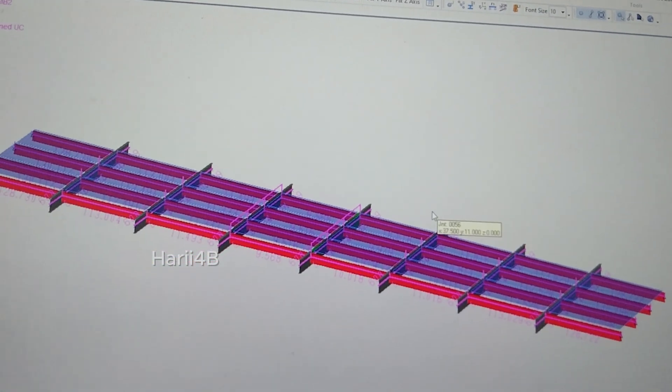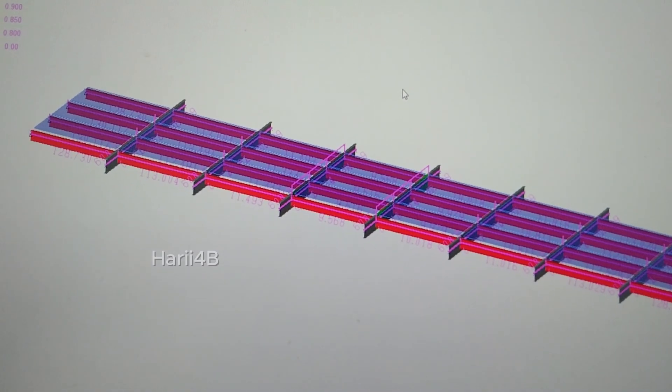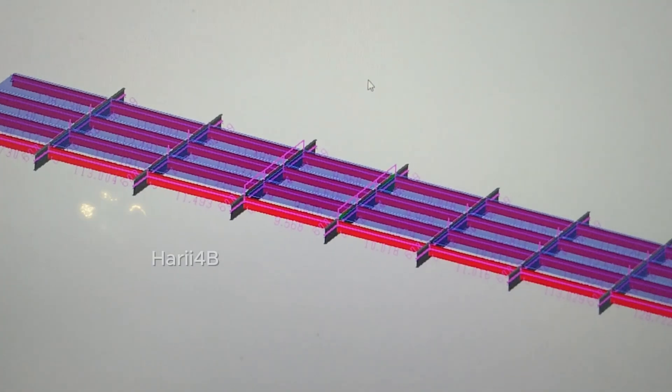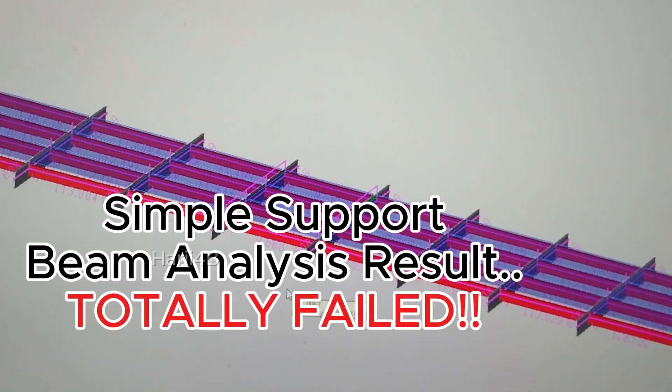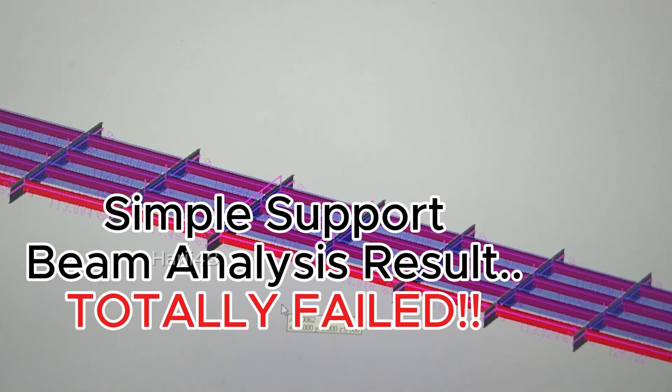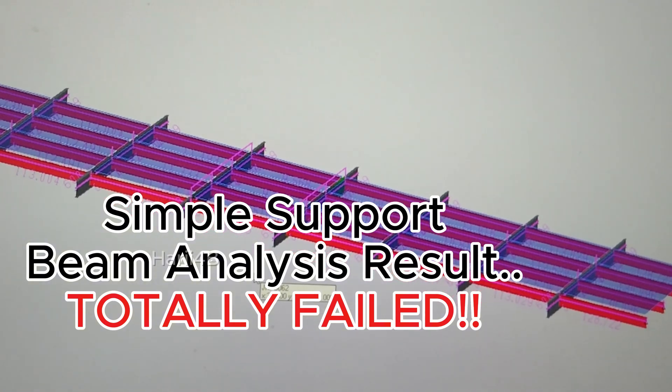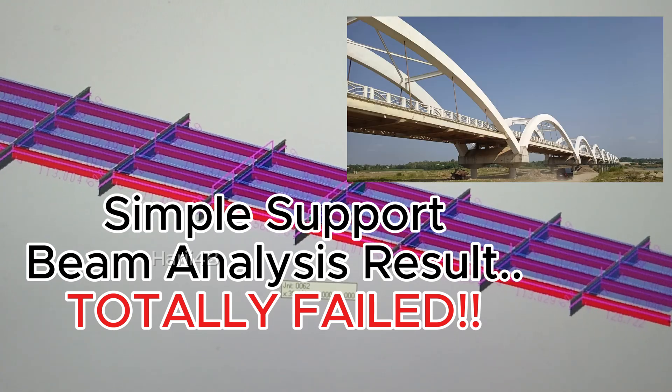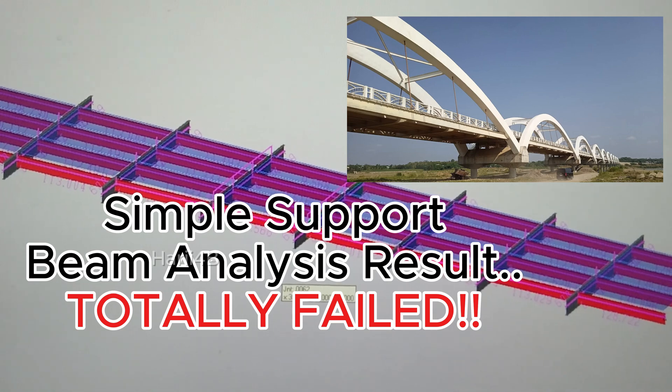Considering the combined load of self-weight plus the truck load plus some factors, see that immediately we can say that this bridge is not designed as a simply supported beam. You see the stresses are all red on the beams - it failed. It cannot pass as a simple supported deck frame, which makes us conclude now that this is really designed as an arc-supported bridge.